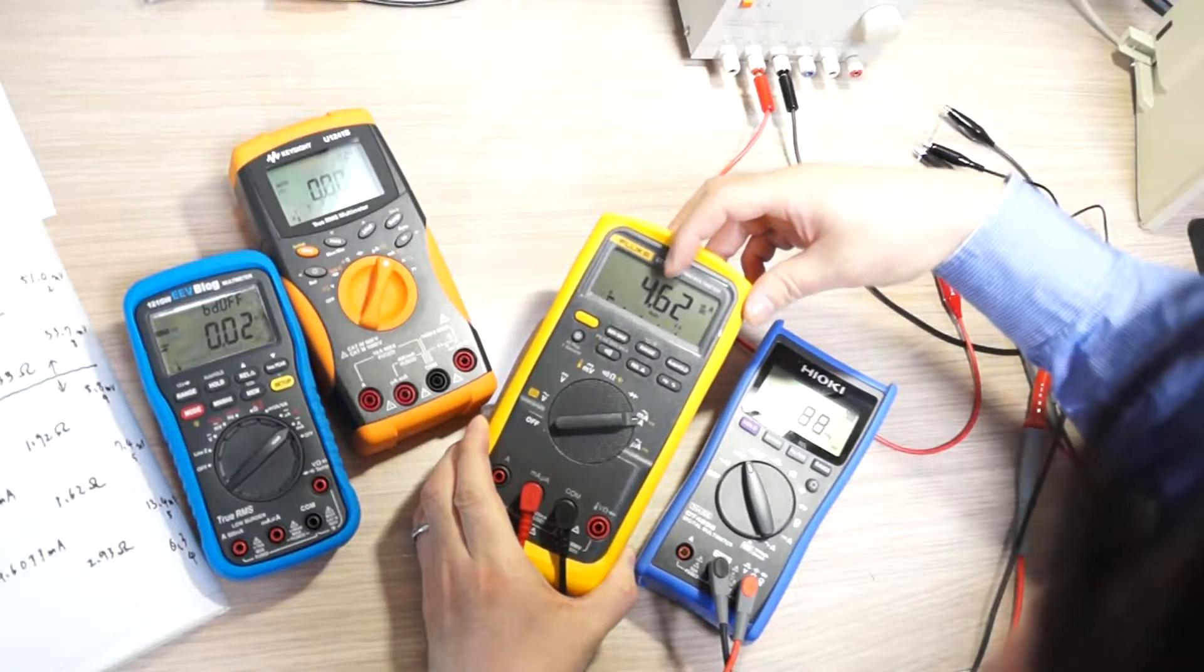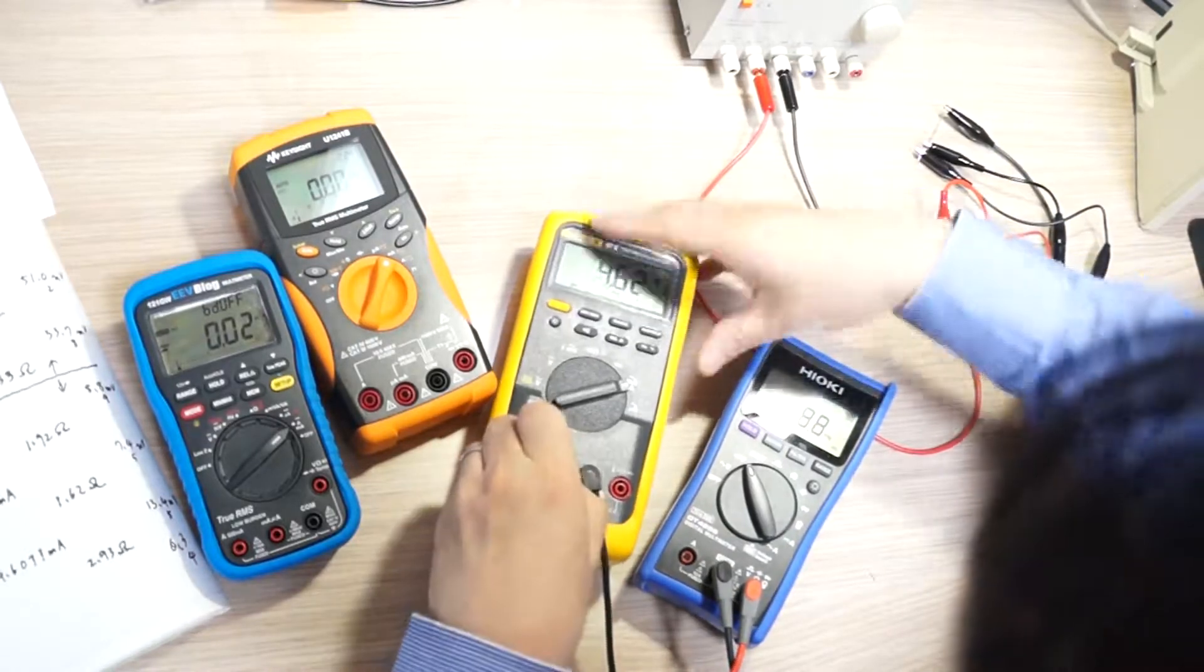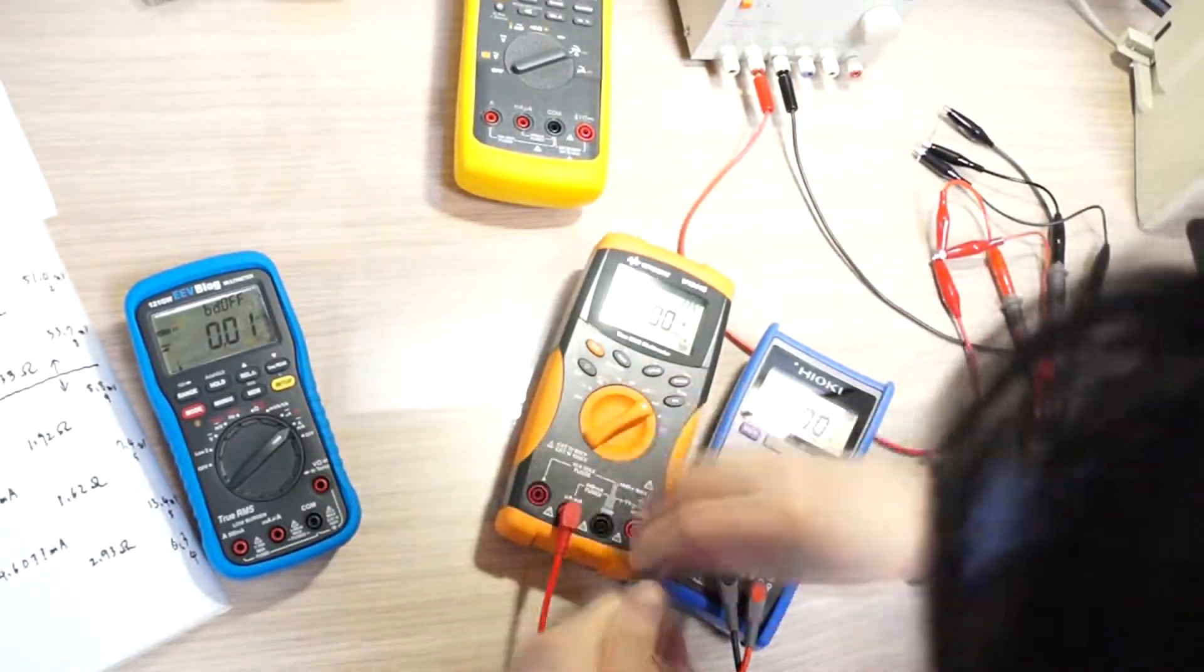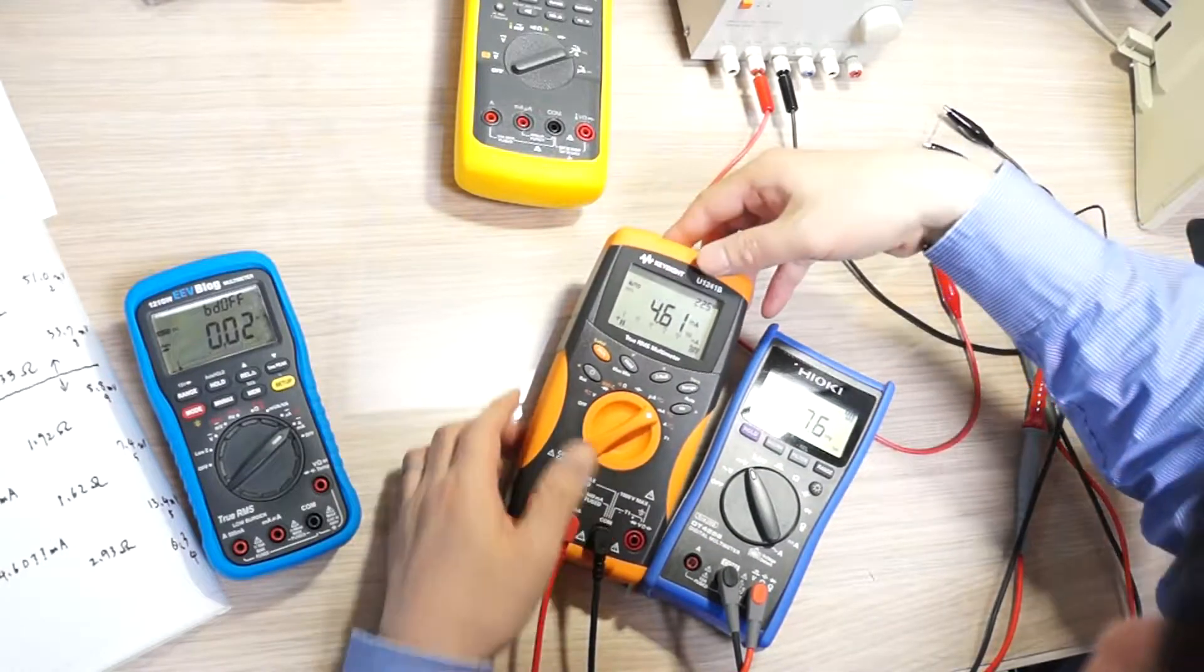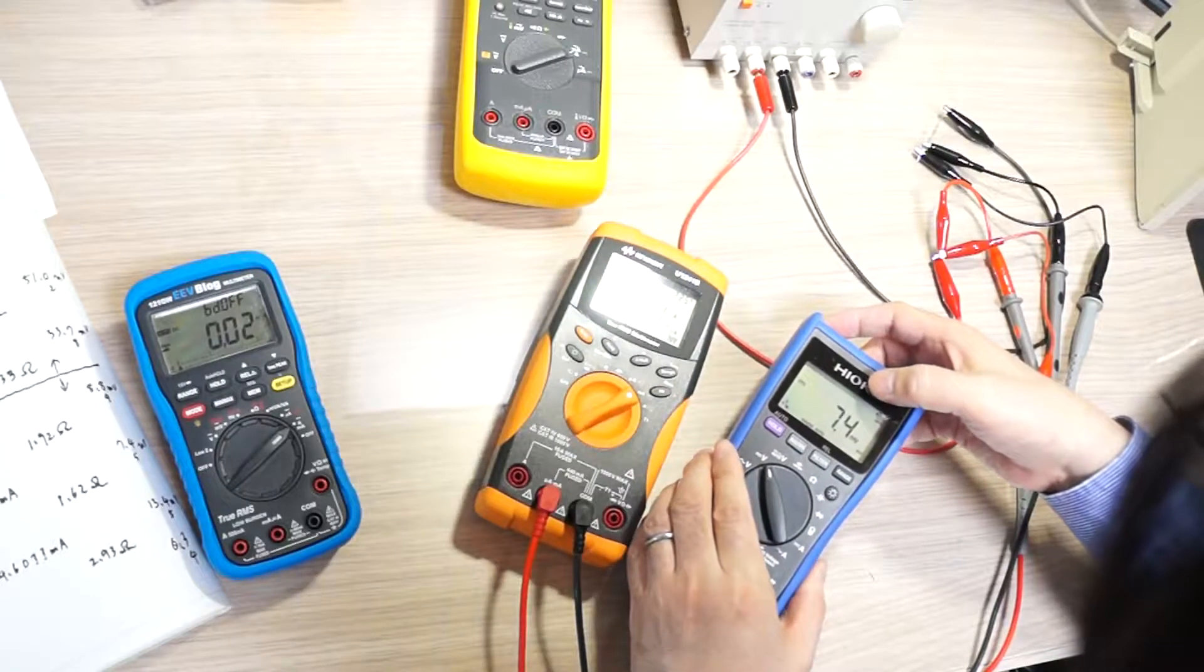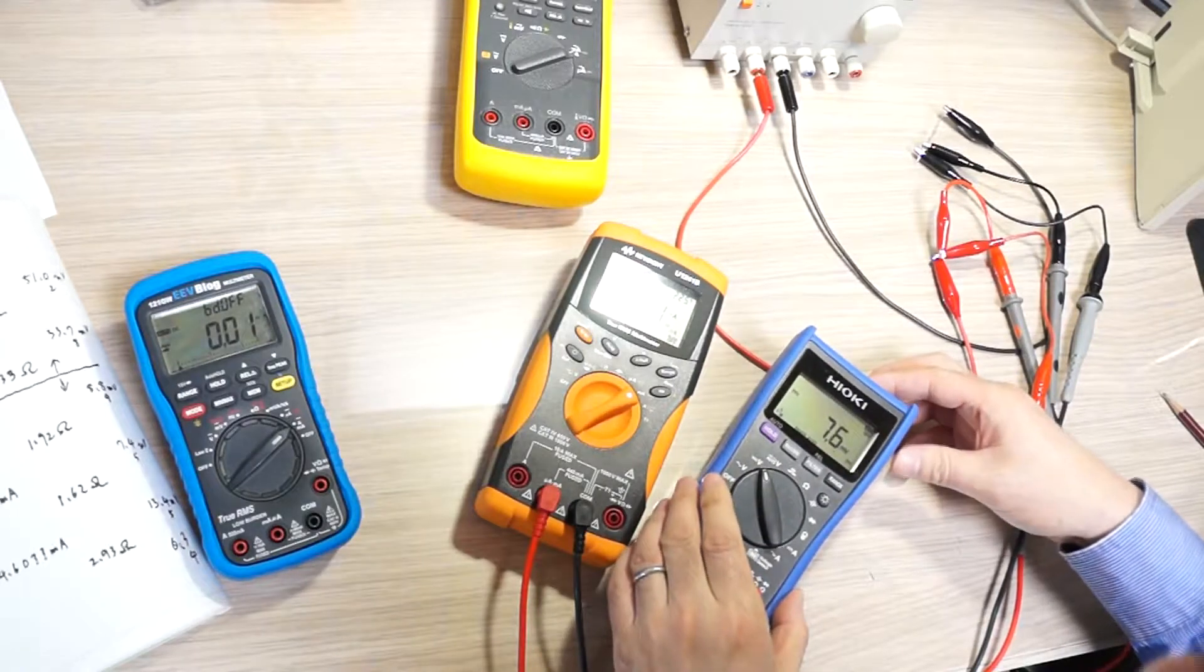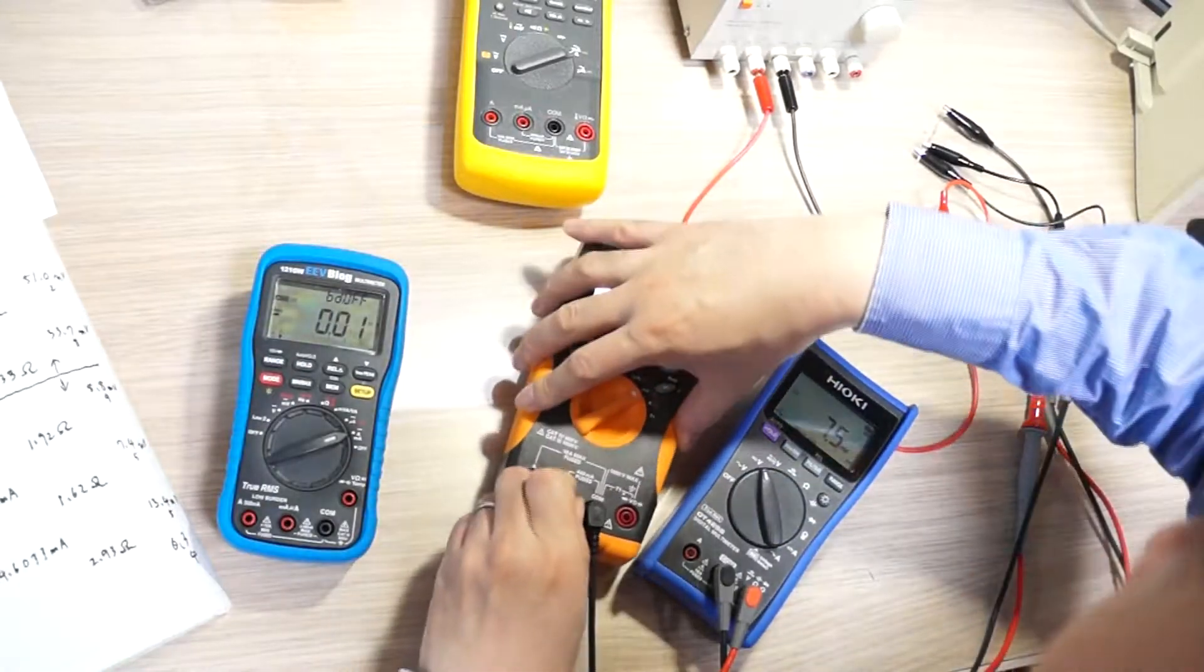The measurement is about the same, 4.62 mA, so it's three digit and moving. The Keysight 4.61 mA, 7.4 7.5, yes so it's pretty much same as yesterday.